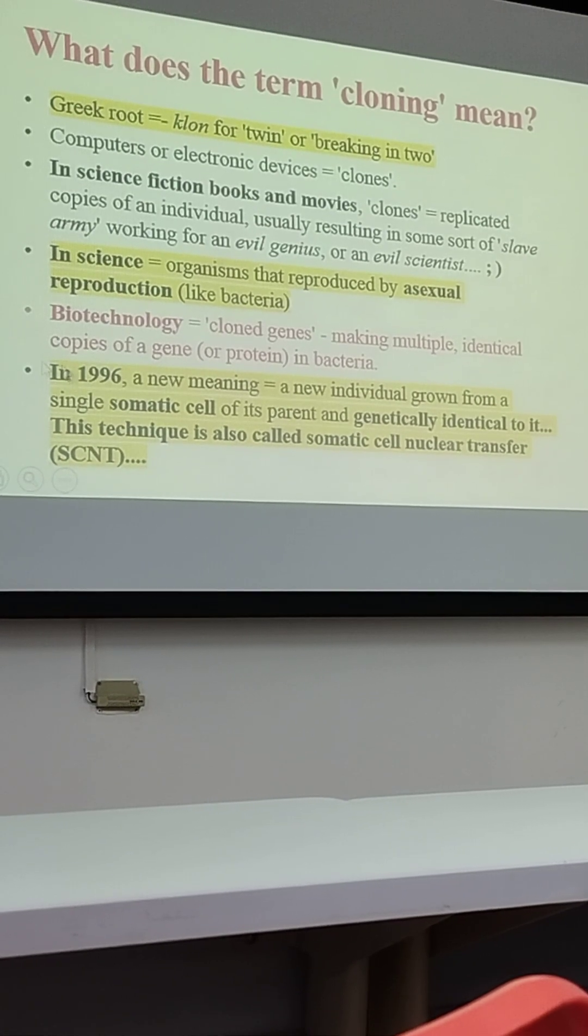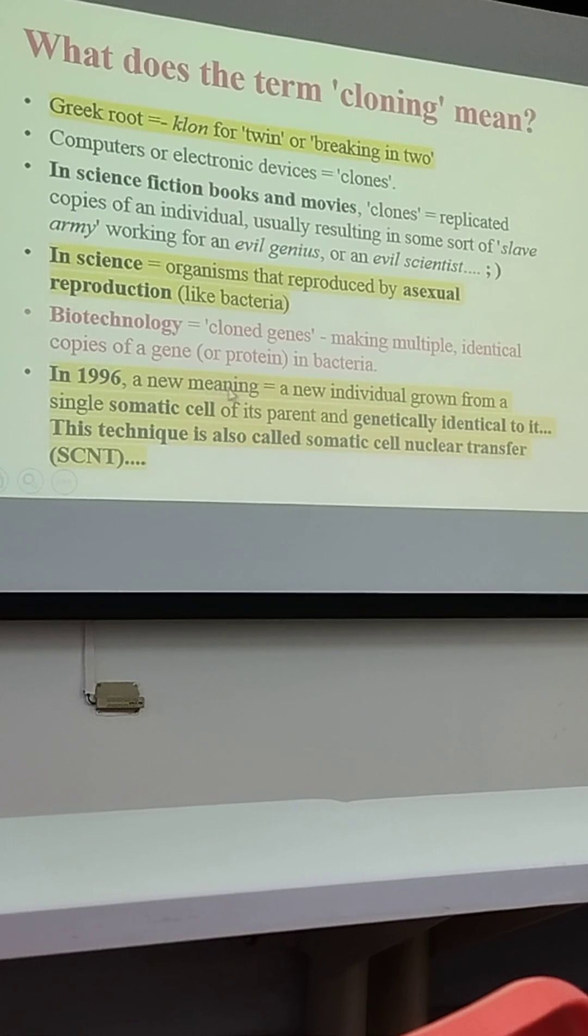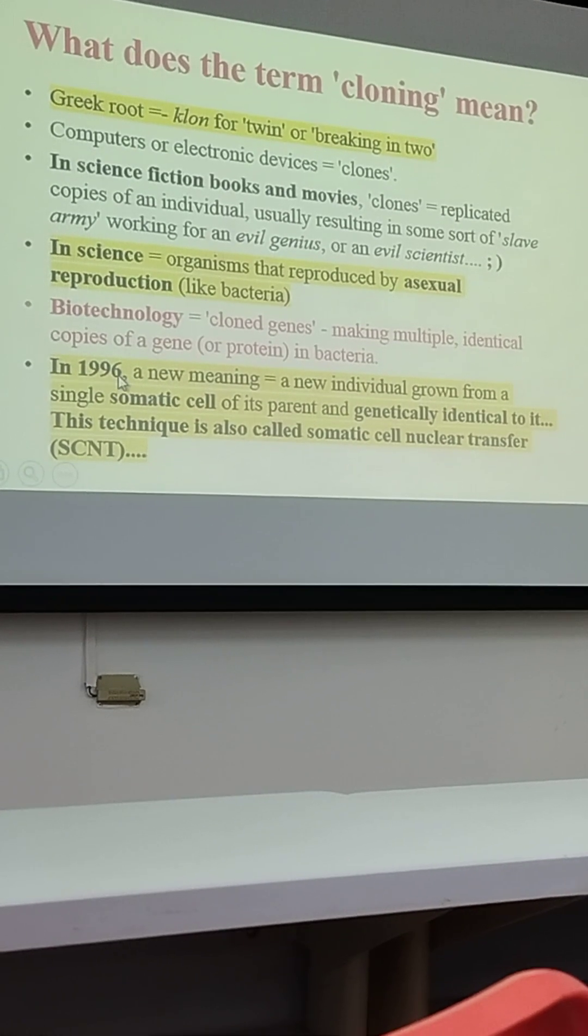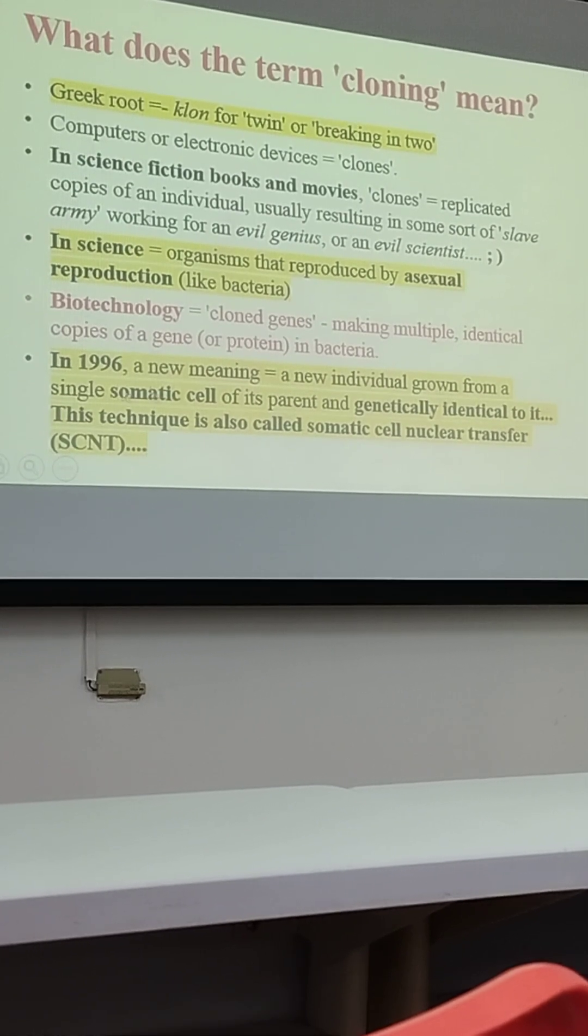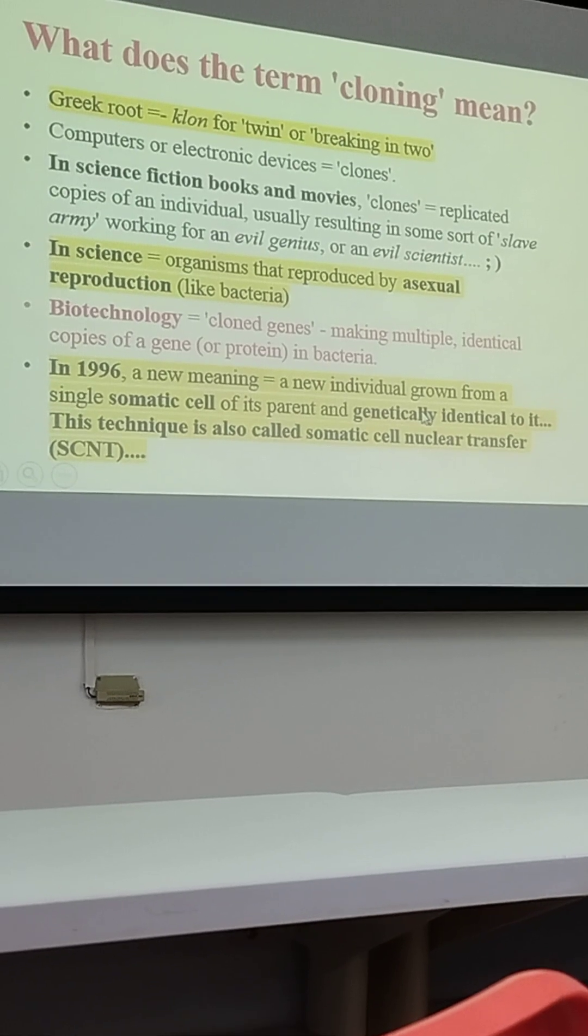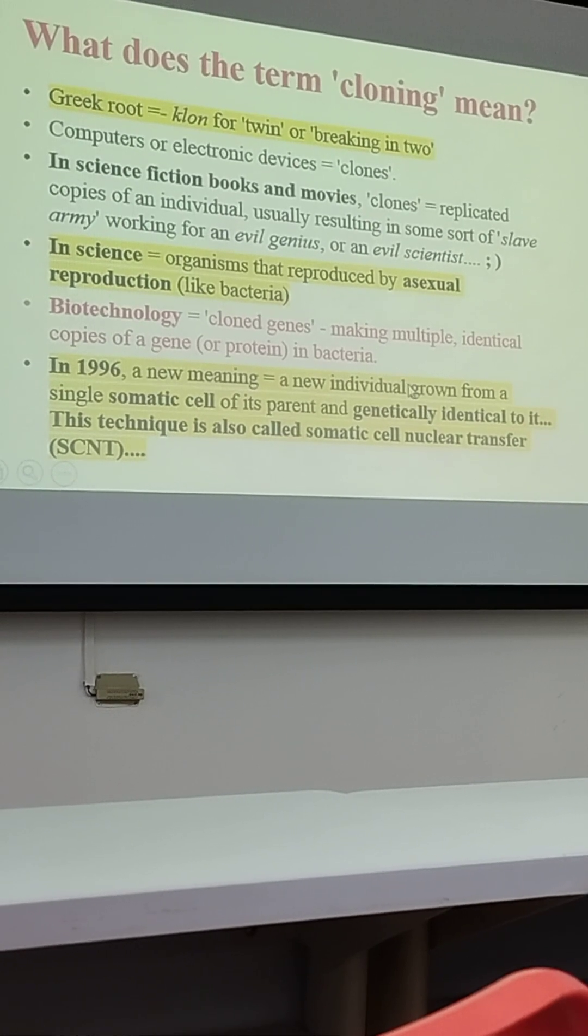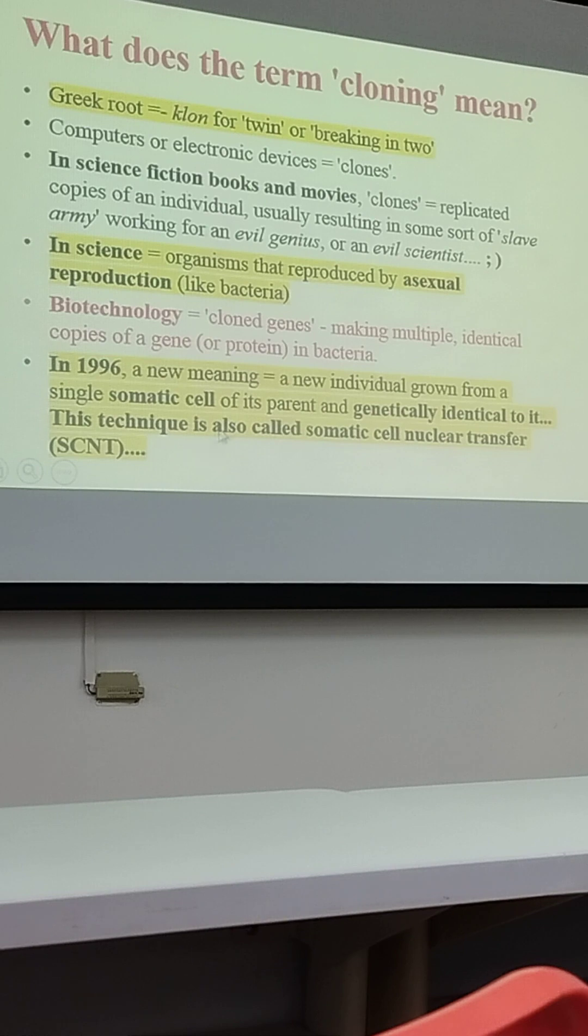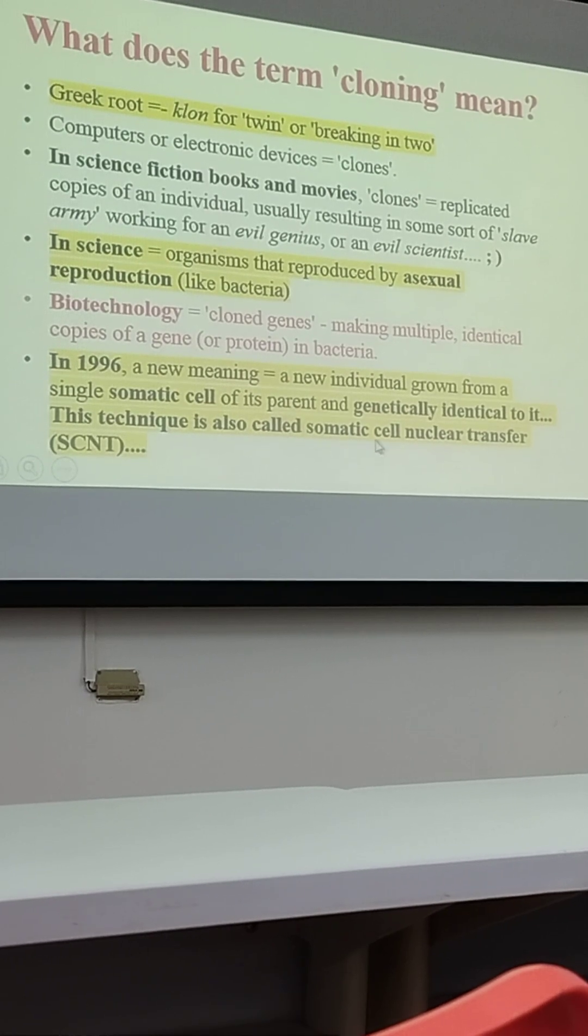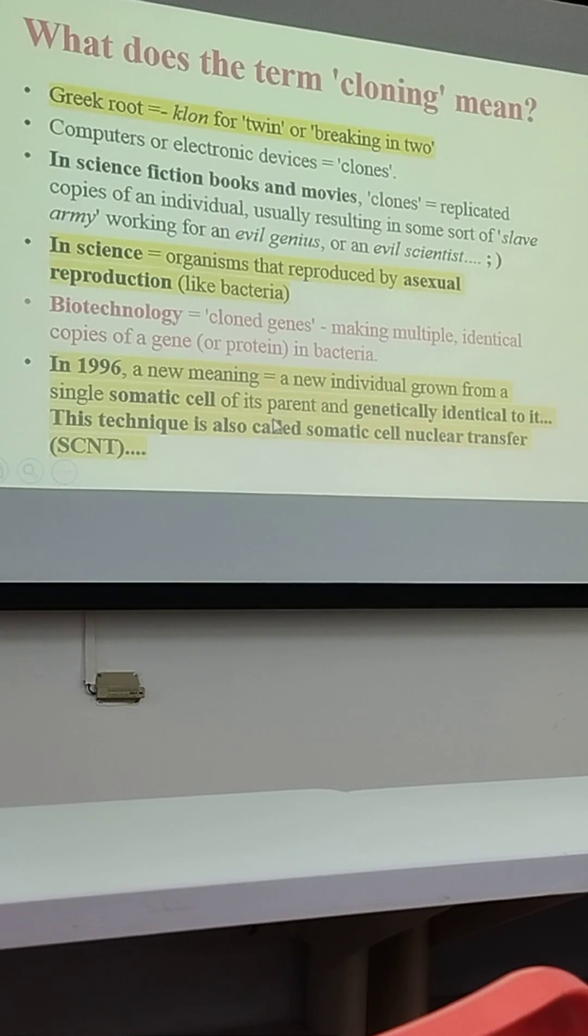So today I will talk about a new meaning from 1996: a new individual grown from a single somatic cell of its parent and genetically identical to it. That is the cloning. So this technique is also called somatic cell nuclear transfer, SCNT.